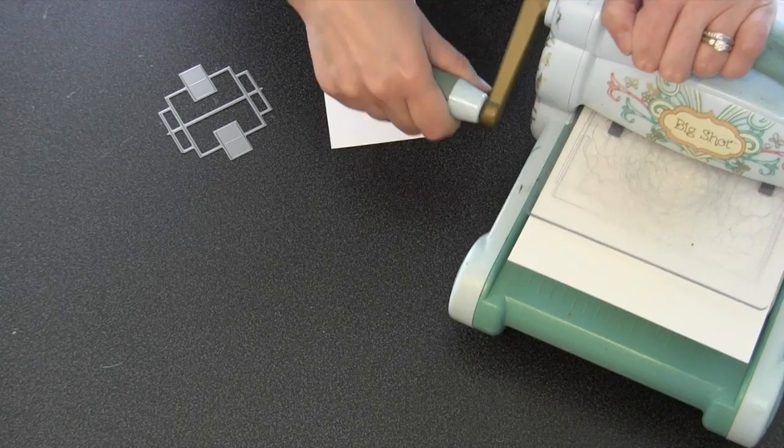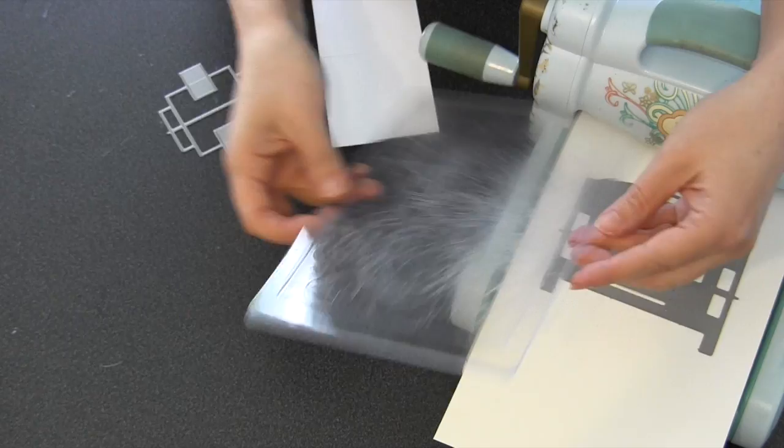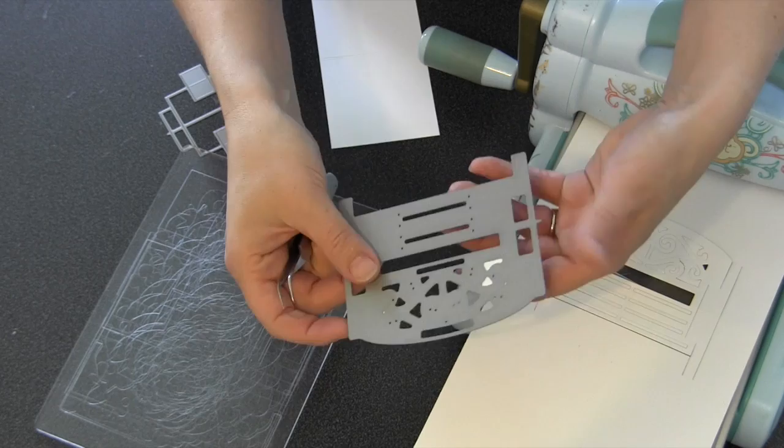It doesn't matter what machine you use. I'm using a Sizzix Big Shot on the magnetic platform. Since I'm using the bench, I rolled through and then rolled back through again. It's a more intricate die. Sometimes that double press helps it with all those little pieces.